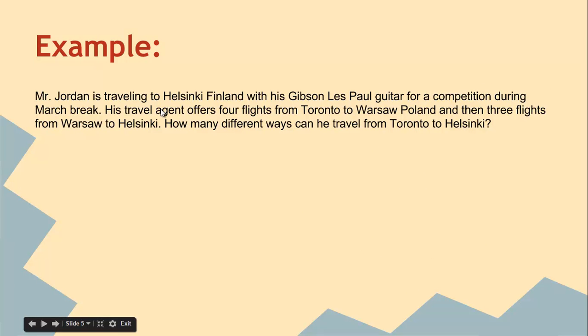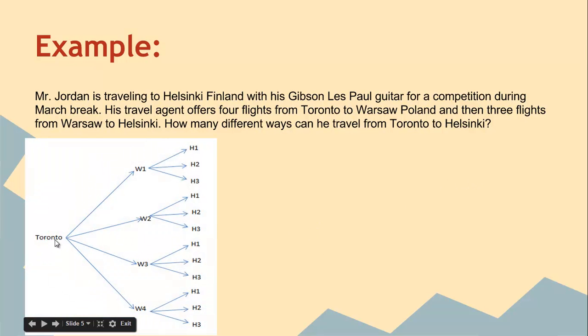Okay, a traveling question. Mr. Jordan's traveling to Helsinki, Finland. His travel agent offers four flights from Toronto to Warsaw first, and then three flights from Warsaw to Helsinki. How many ways can he travel from Toronto to Helsinki? And so you've got a tree diagram to show the four flights to Warsaw and then three flights to Helsinki. So we've got twelve ways.